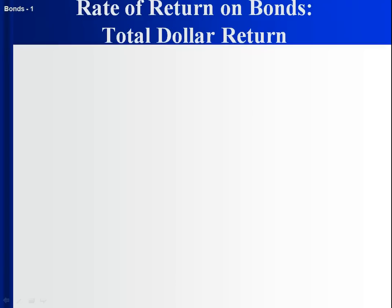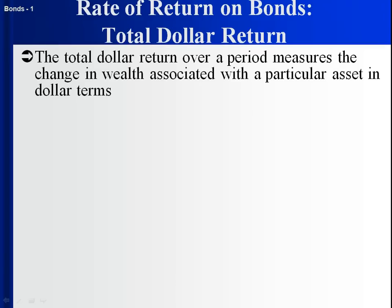When we look at rates of return, we're interested in returns over a particular period — from the beginning of the period to the end. We're going to start by talking about total dollar return, which is the change in wealth as measured in dollar terms associated with a particular asset. For a bond, the difference in our wealth from the beginning to the end of the period is our total dollar return.